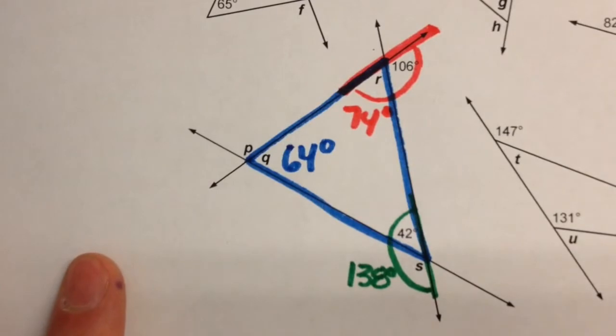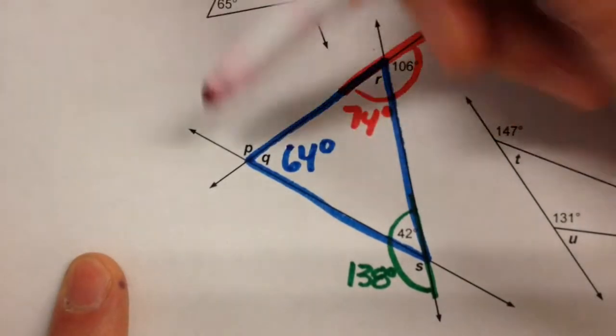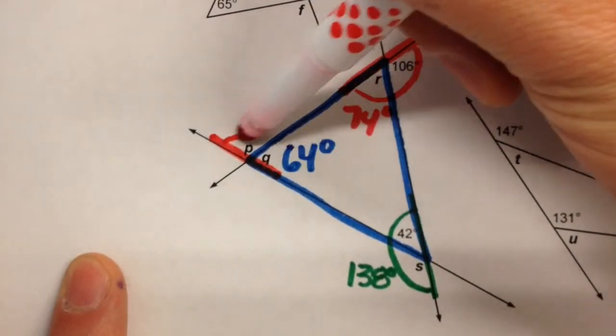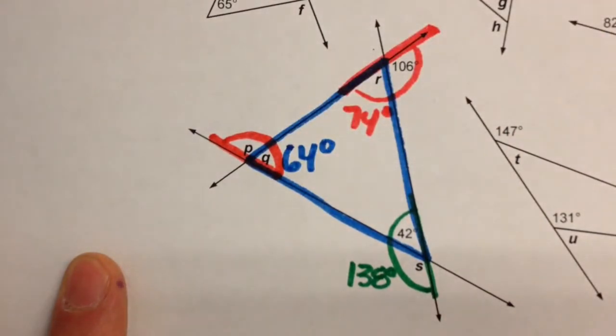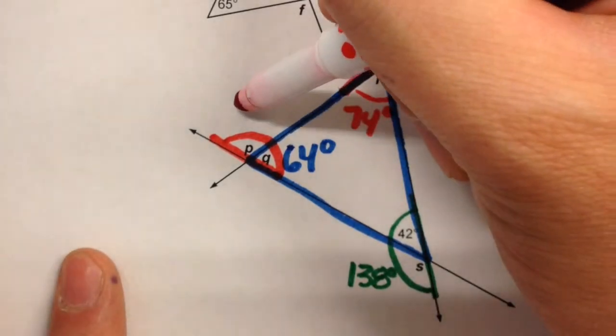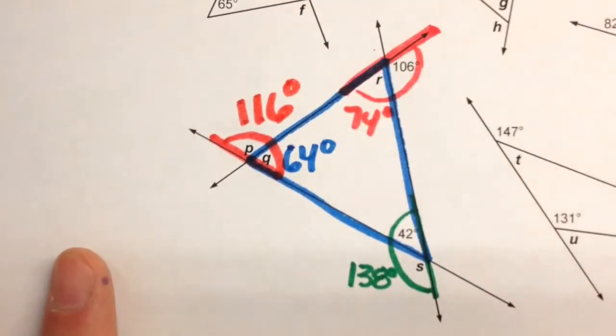Now once we know that, we can figure out angle P because angles P and Q form a straight line, so these two have to add up to 180 degrees, so this has to be 116 degrees.